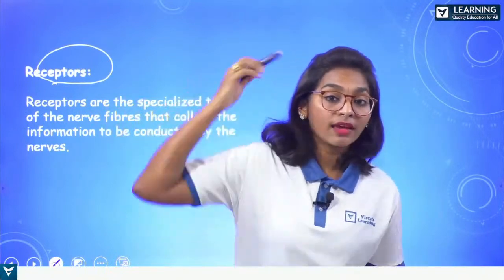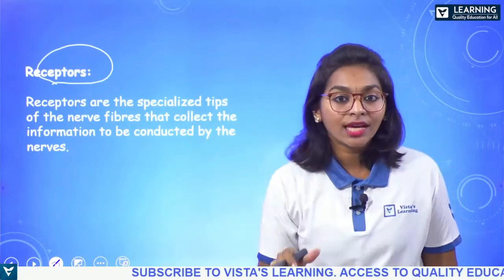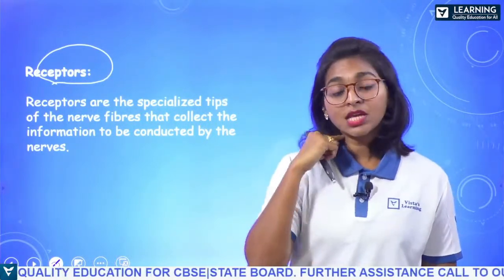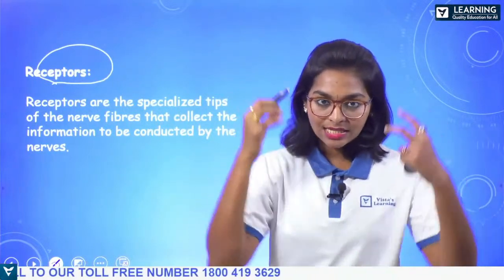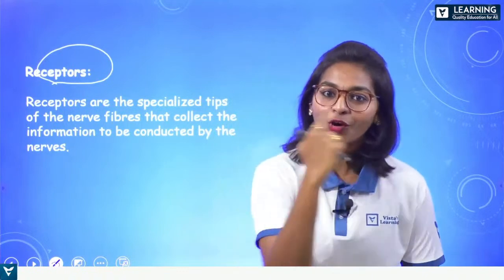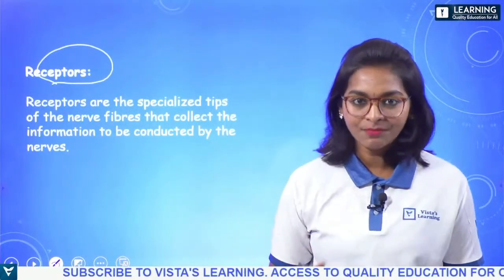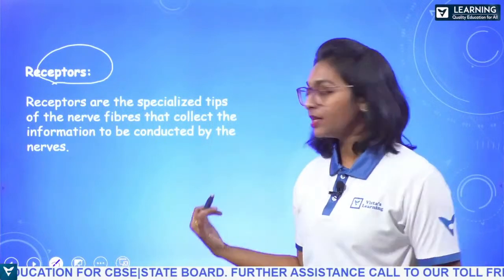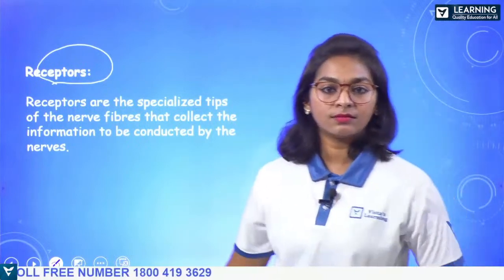When somebody calls your name, that sound wave travels to your ear, bangs your eardrum, travels through your nerves, and reaches your brain, telling you to turn. It then sends messages to your neck to turn, your eyes see the person, the optic nerves capture that information and relay it to your brain, and your brain tells your mouth to speak. This all happens in a fraction of a second, but this is the procedure — coordination is necessary.